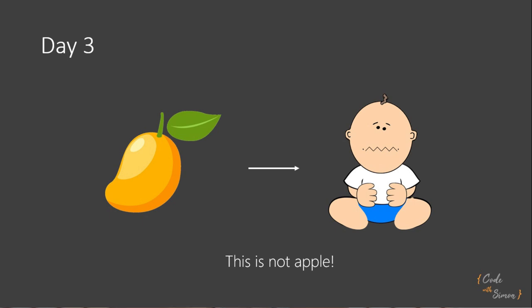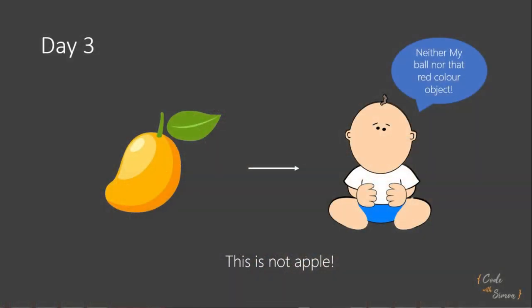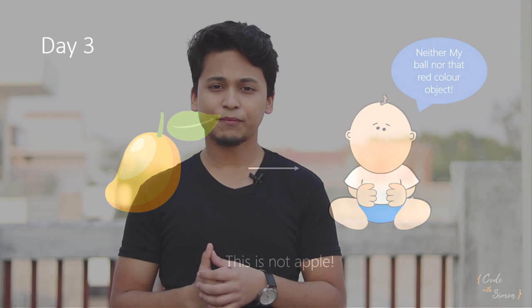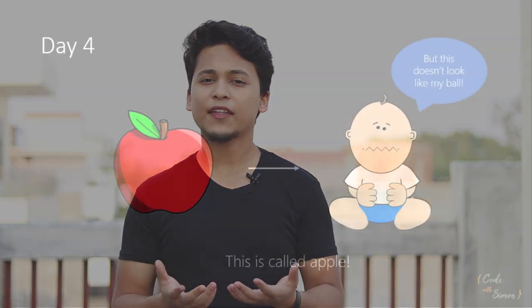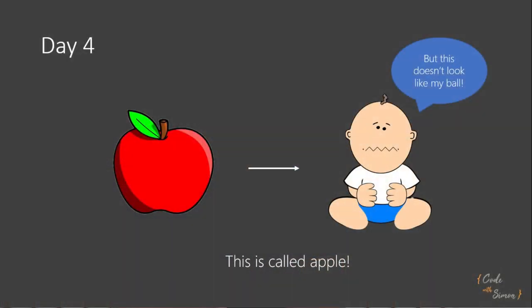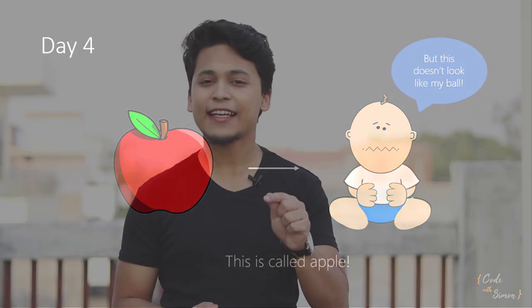He would reach out to him and show him a mango, but he is not going to say that this is called mango. Whereas he says, this is not an apple. The father is trying to make his kid learn to differentiate between different fruits. On day four, the father reaches him again and tells him that this is again an apple — this red color is an apple.